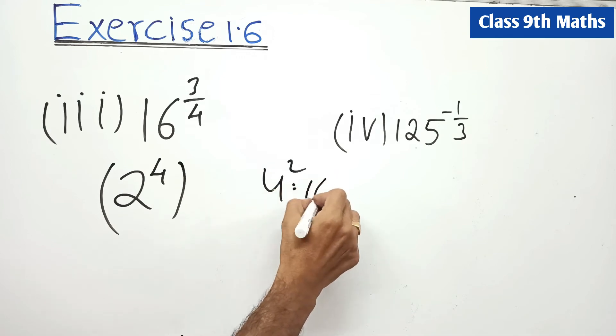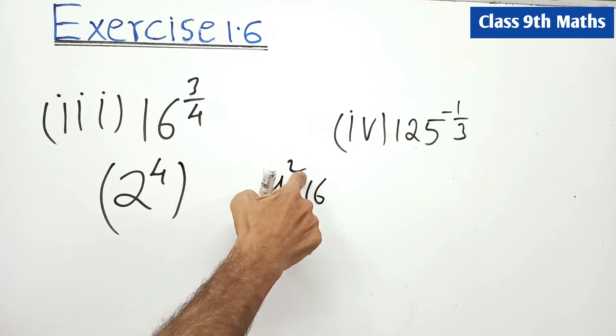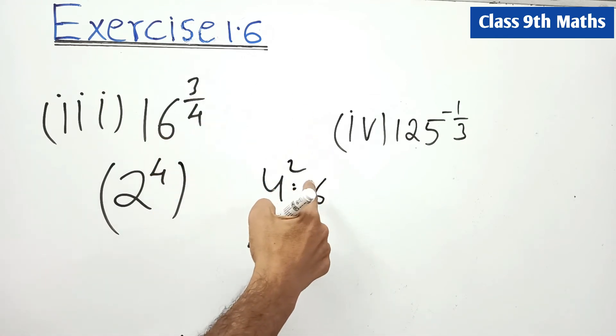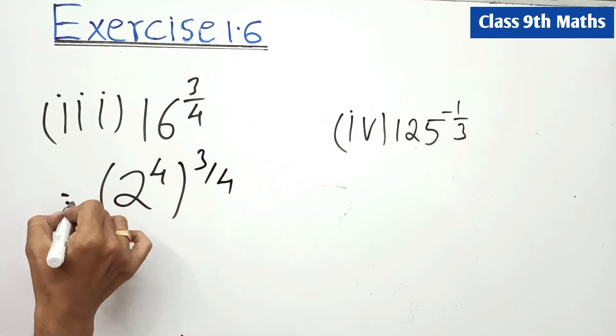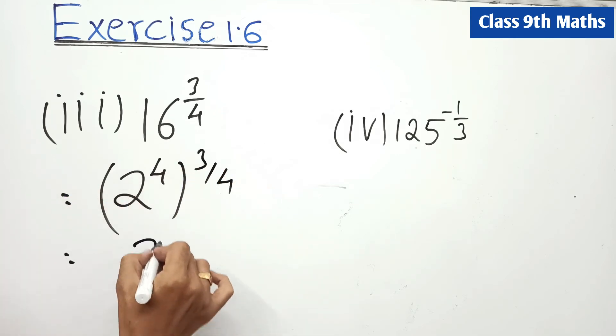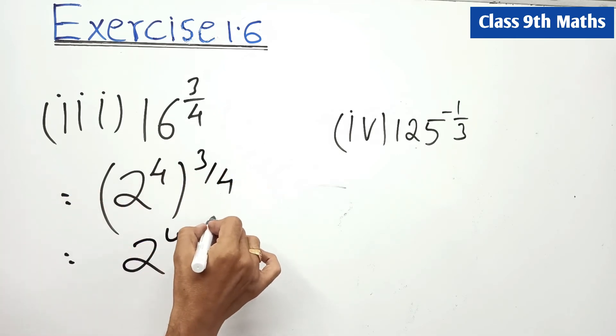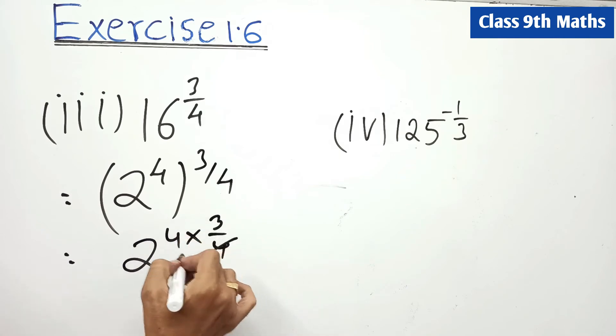We are not taking 4 squared because it would get complicated. We will take 3 by 4. So 2 to the power 4 multiply by 3 upon 4. 4 and 4 will be cancelled, 2 to the power 3, so answer is 8.